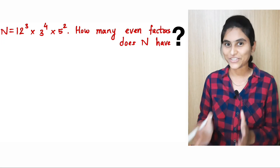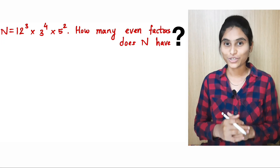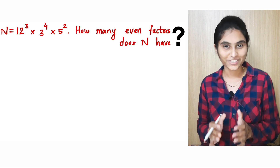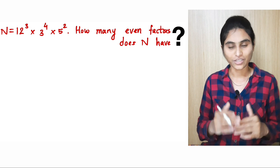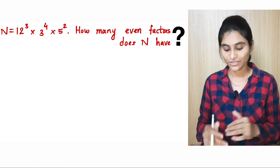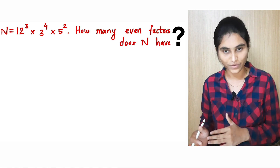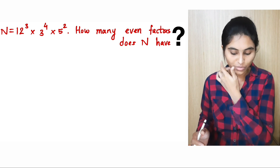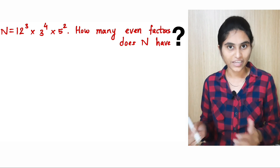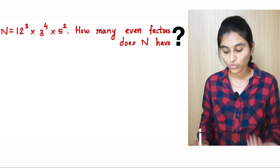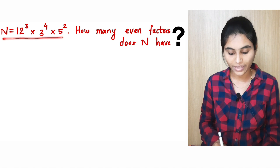Hey everyone, welcome back to another interesting video. In this video, we are going to solve a very interesting question which is there on the whiteboard. Suppose we have given a number n which is equal to 12 cube times 3 raise to 4 times 5 square, and we have been asked about how many even factors does n have. That means we have to find the number of even factors of this number n.